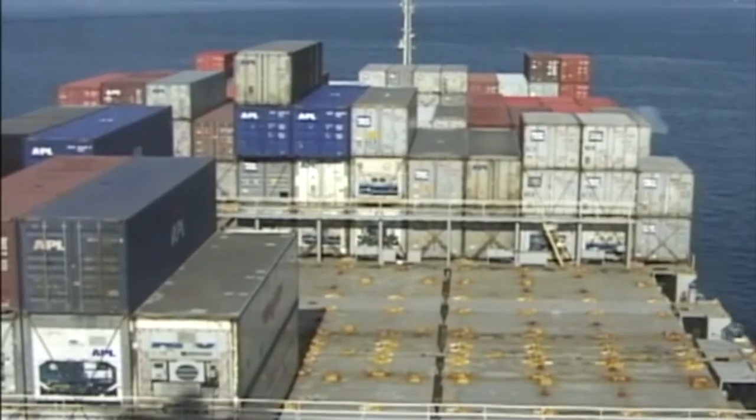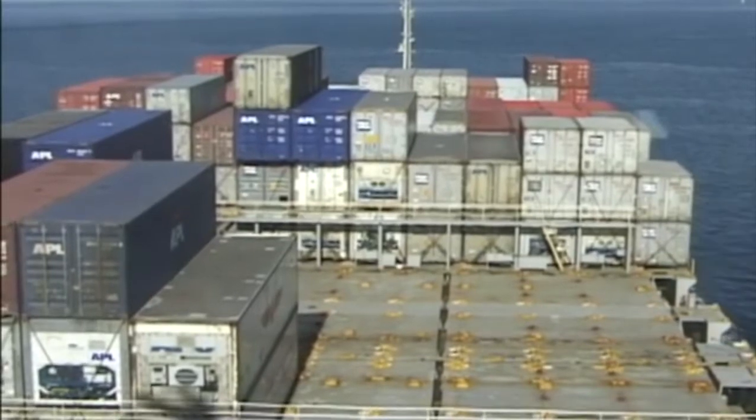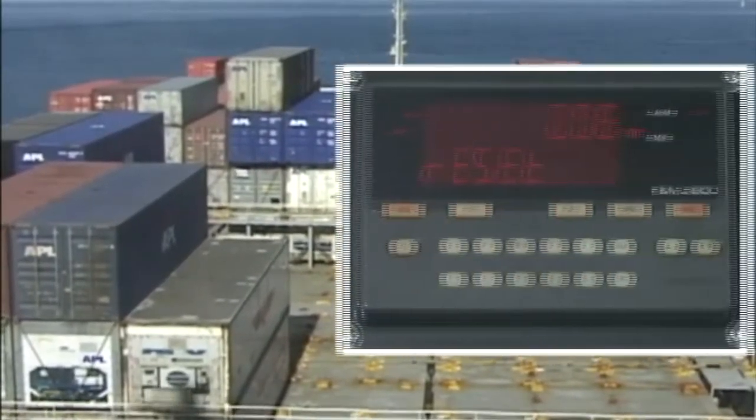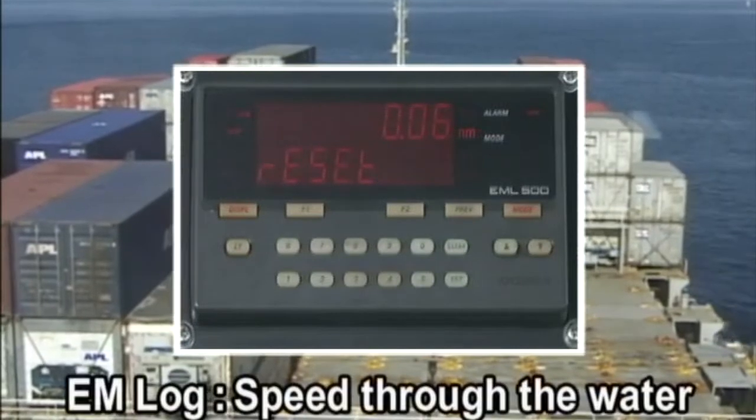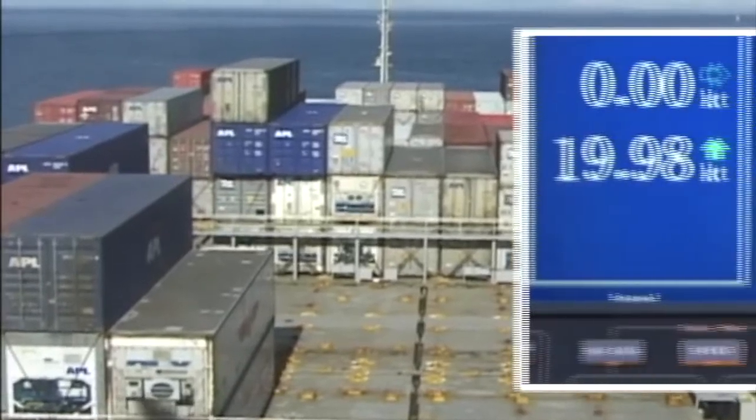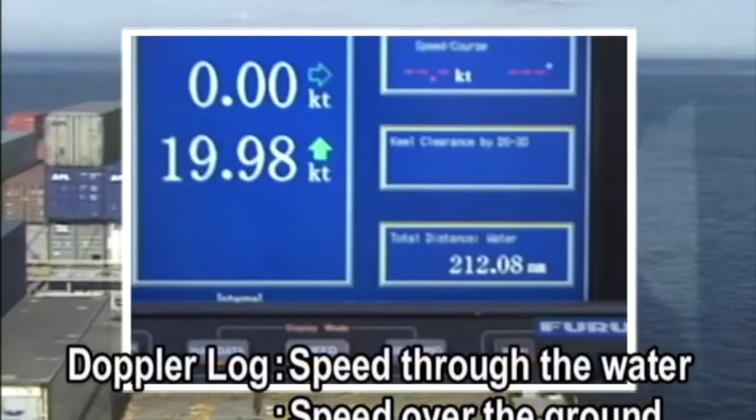Both the electromagnetic EM log and the Doppler log are used to measure ship speed. While the EM log measures only the speed through the water, the Doppler log can measure speeds both through the water and over the ground.